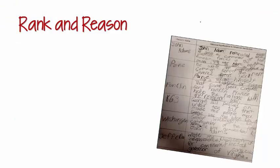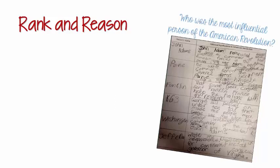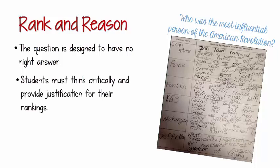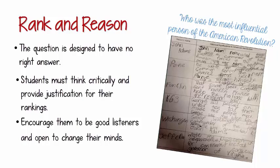The first step is for you to give your students an open-ended question that leads them to rank a group of people. In this example, it's: who was the most influential person of the American Revolution? The question is designed to have no right answer. We recommend you have your students work in groups to come up with a list — this really helps to support those with more limited communication skills. As they work together, students must think critically and provide justification for their rankings. After an appropriate amount of time for them to complete an initial ranking, have groups combine to share their thinking. They begin to have many debates over their choices — please encourage them to be great listeners and open to changing their minds. This thinking is much deeper than you would get if you simply handed them a worksheet to complete.